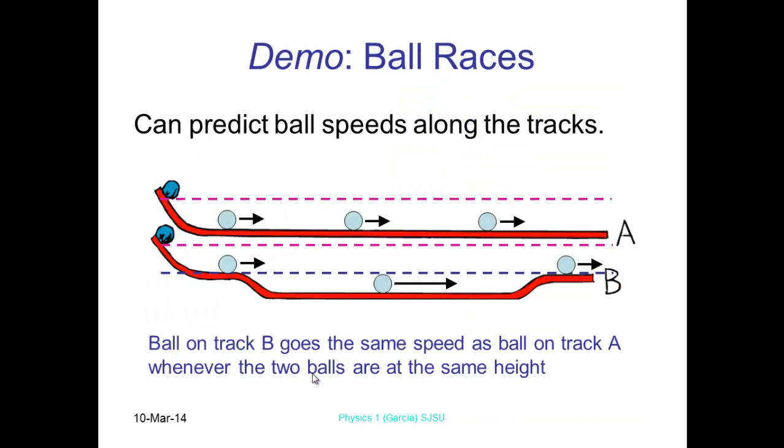So can you predict the speed of the ball on the track? Obviously ball B goes faster because it falls further, so therefore it's going to have a faster velocity. We can demo this in the lab, and we will do that using our roller coaster.